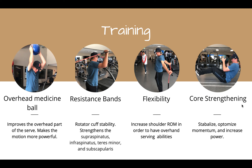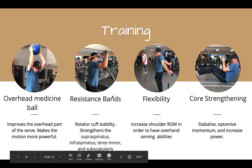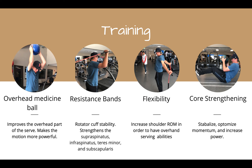I worked with Travis two times a week to stabilize his shoulder and increase range of motion. The overhead medicine ball slam makes the motion of the overhand serve more powerful. The resistant bands strengthen the rotator cuff, the little muscles inside of your shoulder girdle. I also worked with Travis on flexibility to increase his shoulder range of motion for overhand serving, and core strengthening to stabilize, optimize momentum, and increase his power from the trunk.